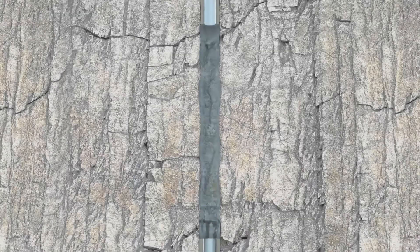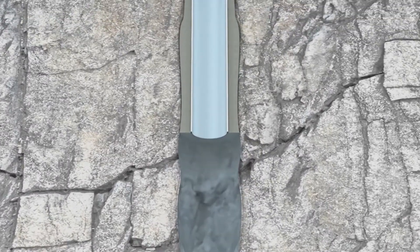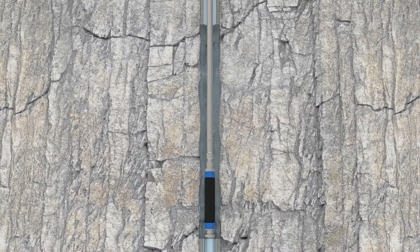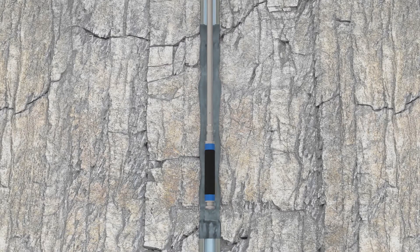The application demonstrated is where the bridge plug is conveyed on drill pipe to be set in open hole after the milling of a casing window typical of a plug and abandonment operation.